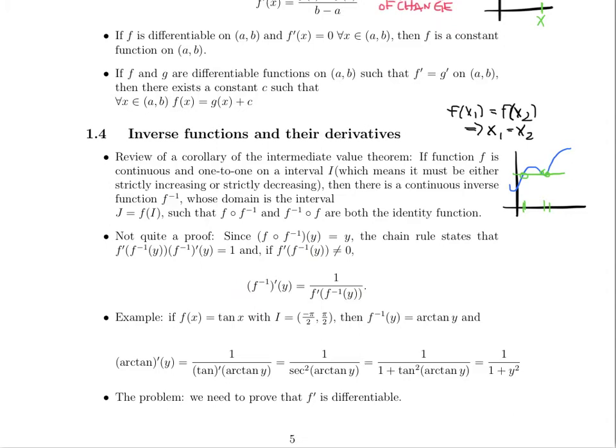Let's take a look at this example. Say our function f is tangent of x, and our interval that we care about is from negative π over 2 to π over 2. Then our inverse function is, of course, going to be arctan of y.